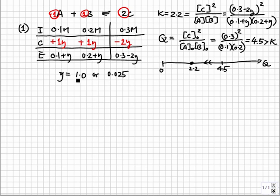1.0 can't be right because this will give a negative equilibrium concentration for C, so 0.025 is the right answer.